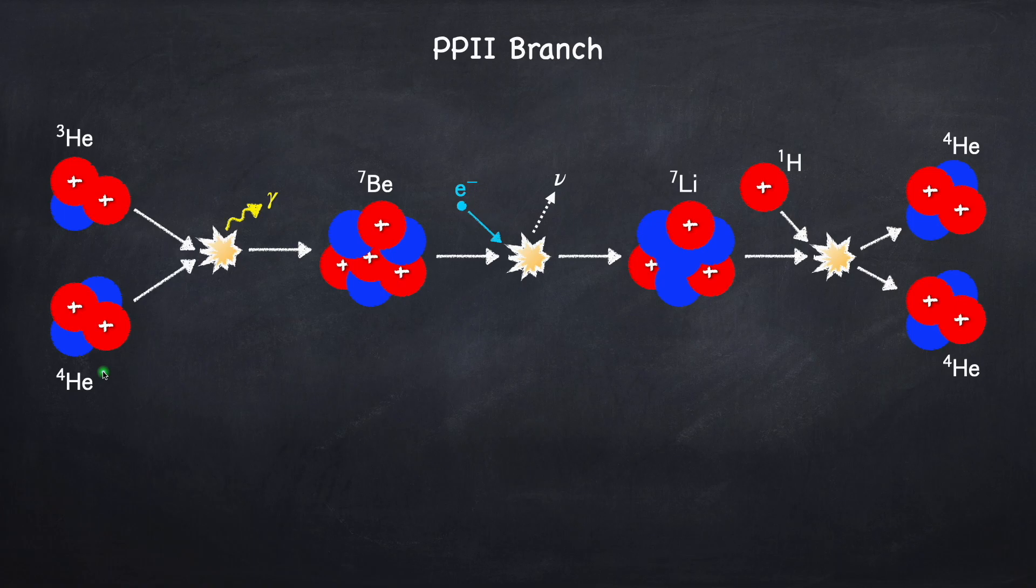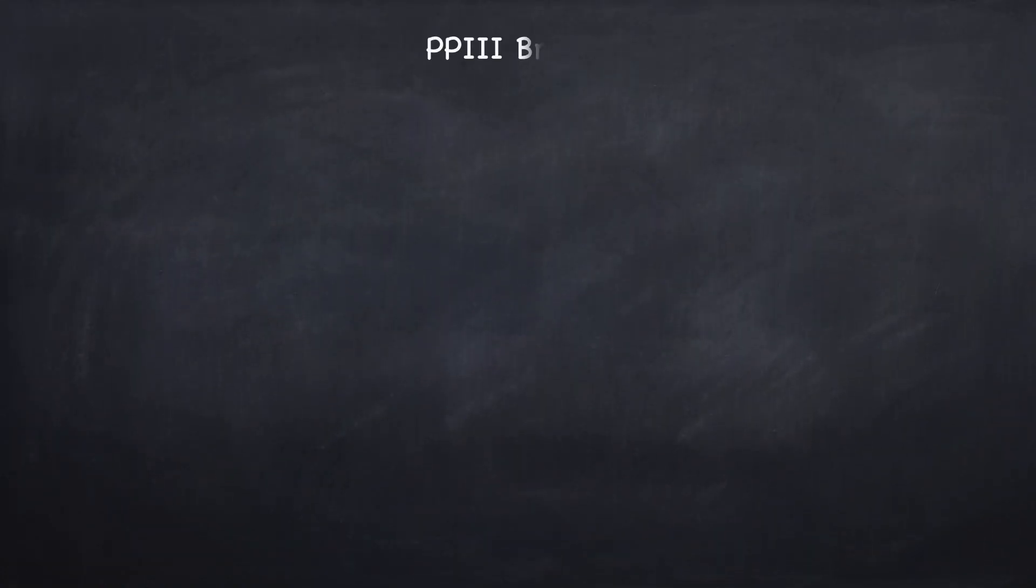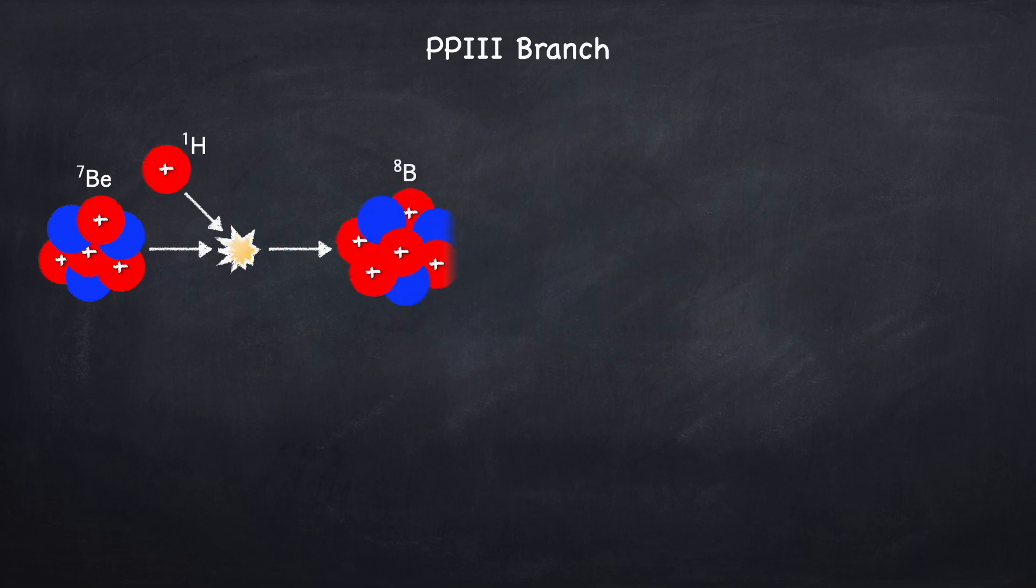But actually there's a third possibility, which is that when you get to beryllium-7, instead of capturing an electron, you divert off to the PP3 branch. So let's take a look at that branch now. We start off with beryllium-7, and instead of capturing an electron, as we did in the PP2 branch, we capture a proton. And this makes boron-8.